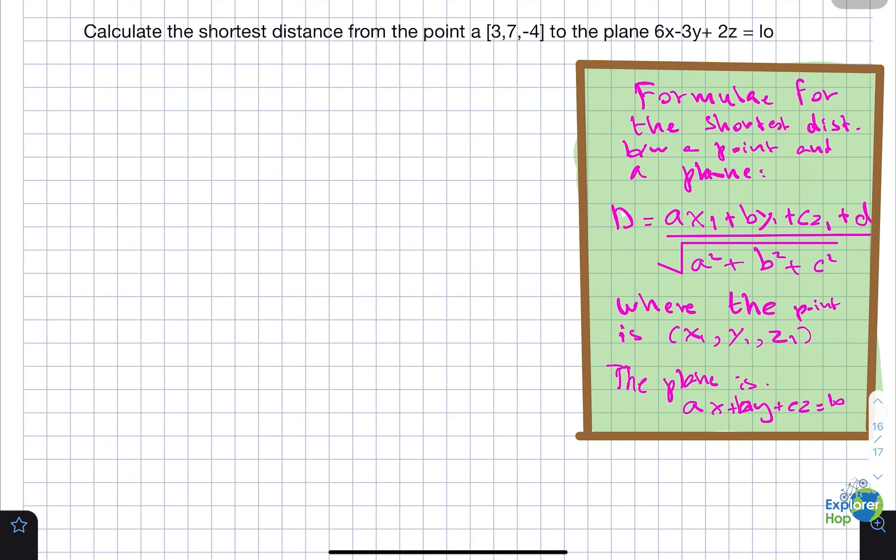Today we will calculate the shortest distance from the point to the plane 6x minus 3y plus 2z equals 10.